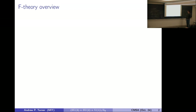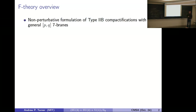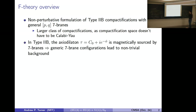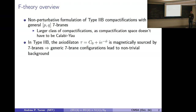Let's go through the basics of F-theory. F-theory can be thought of as a non-perturbative formulation of type IIB compactifications that allow for general p-q seven-branes. An important feature is that it allows access to a larger class of compactifications because the compactification space is not required to be Calabi-Yau in order to preserve supersymmetry. In type IIB, the axio-dilaton field is magnetically sourced by seven-branes, meaning that in a generic seven-brane configuration you will generally have non-trivial background fields.